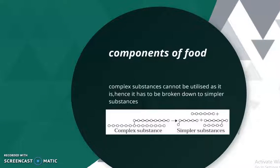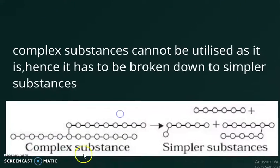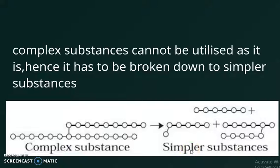The components of food are complex substances which we cannot obtain as such in our body. They have to be broken down into simpler forms. As illustrated in this figure, when the body undergoes digestion, complex substances are broken down to form simpler substances — that is what happens in digestion in our body as well as in animals' bodies.